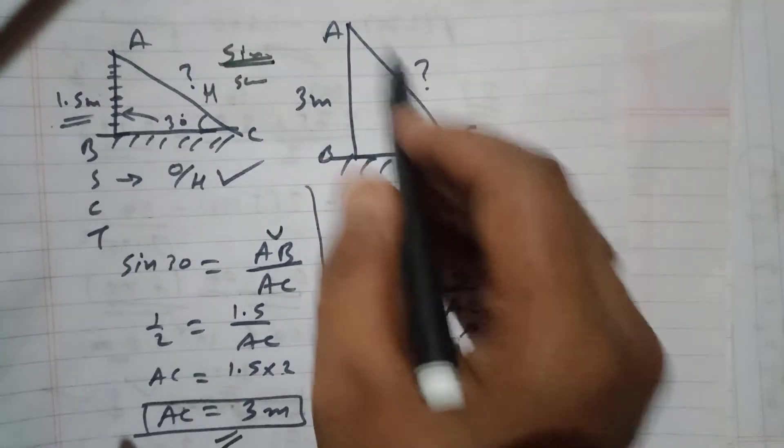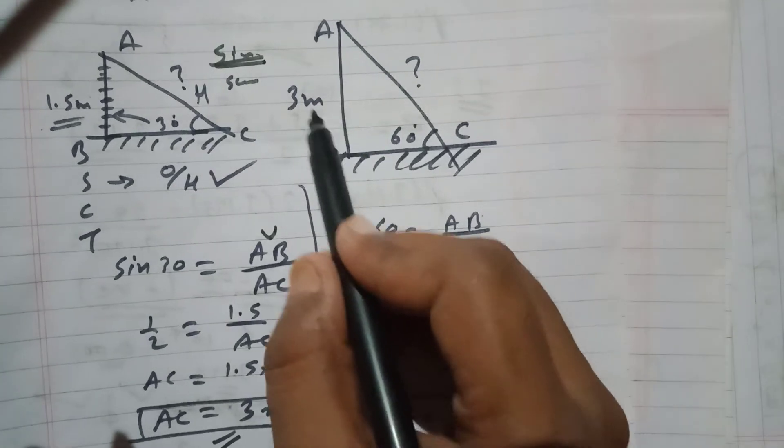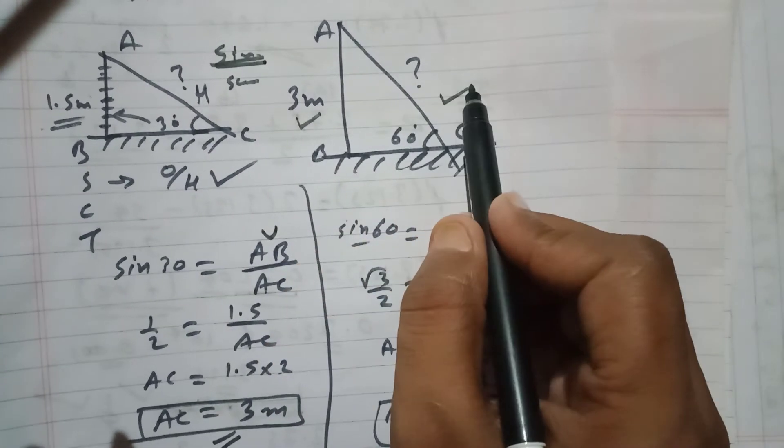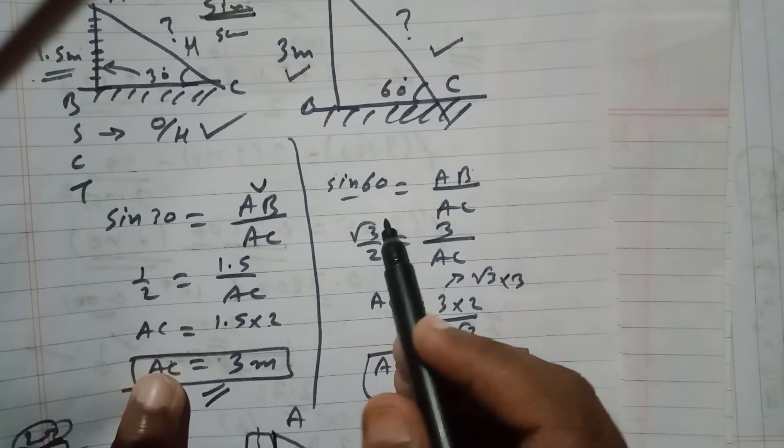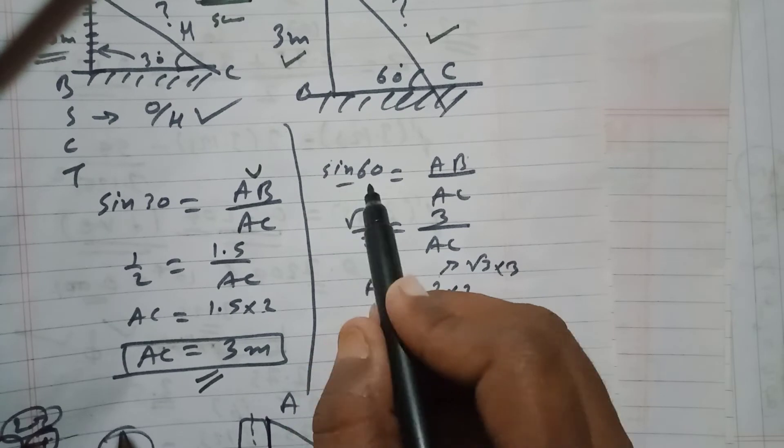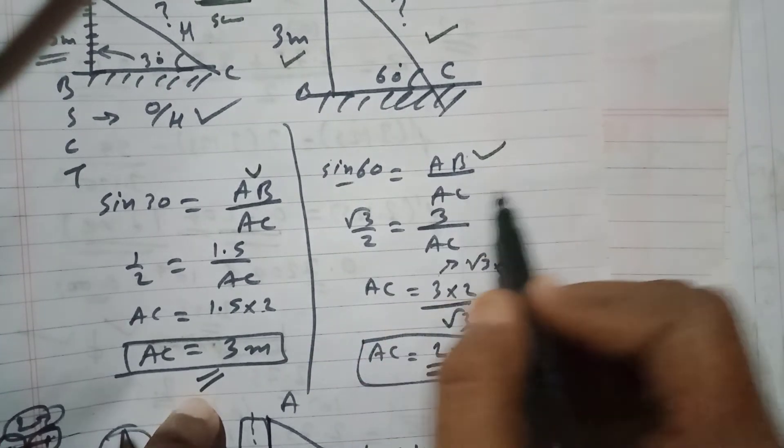I will use sine 60. Why? Because the side opposite to the angle is given and we need to find out the hypotenuse. That is only possible in the case of sine. So sine of 60 degrees is equal to AB upon AC. AB is your opposite side and AC is your hypotenuse.